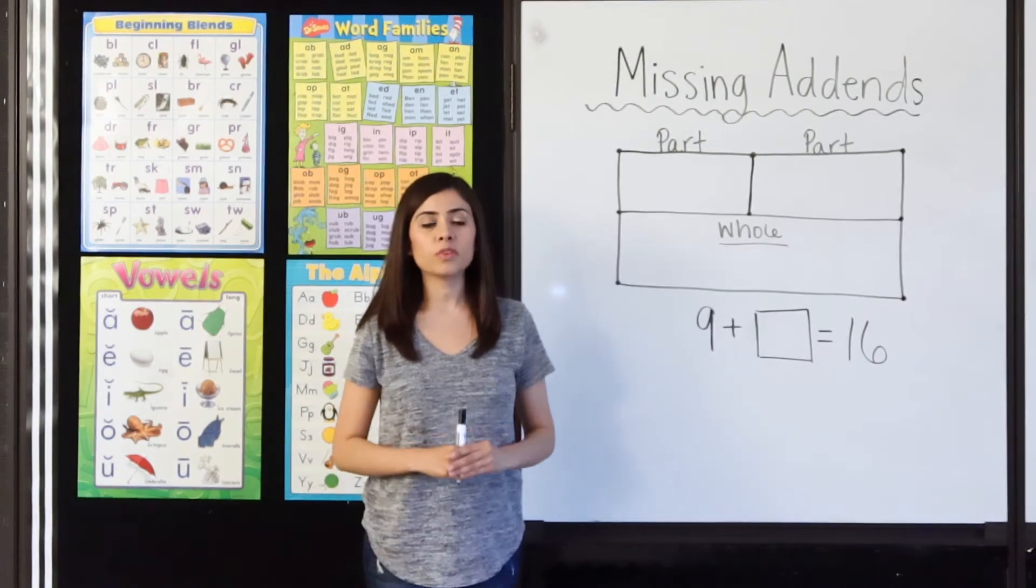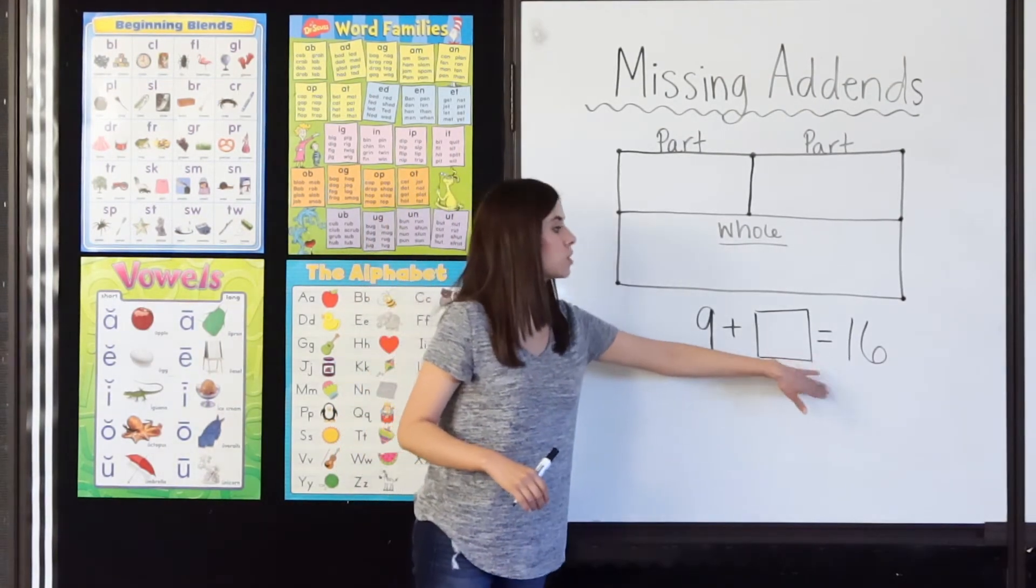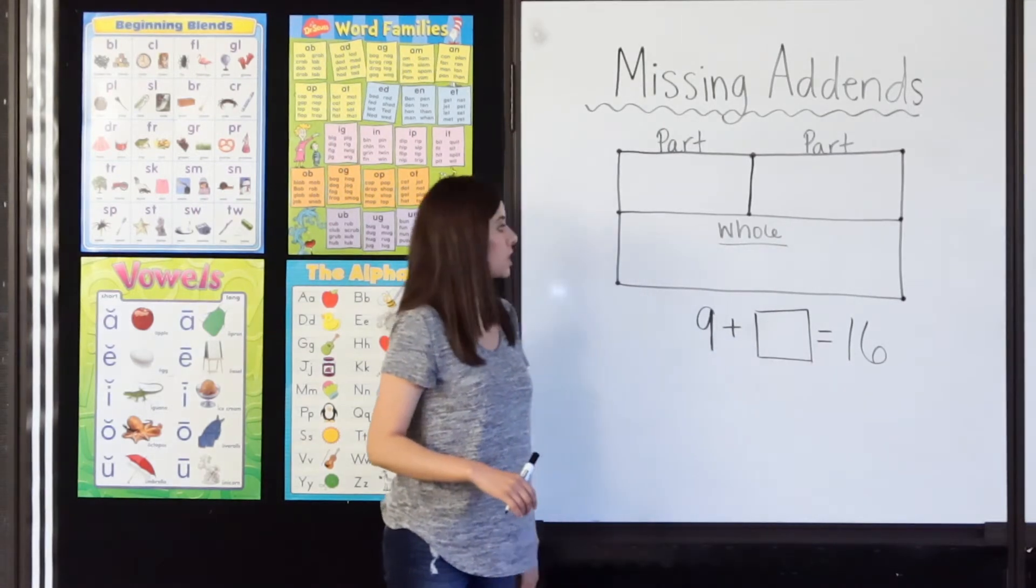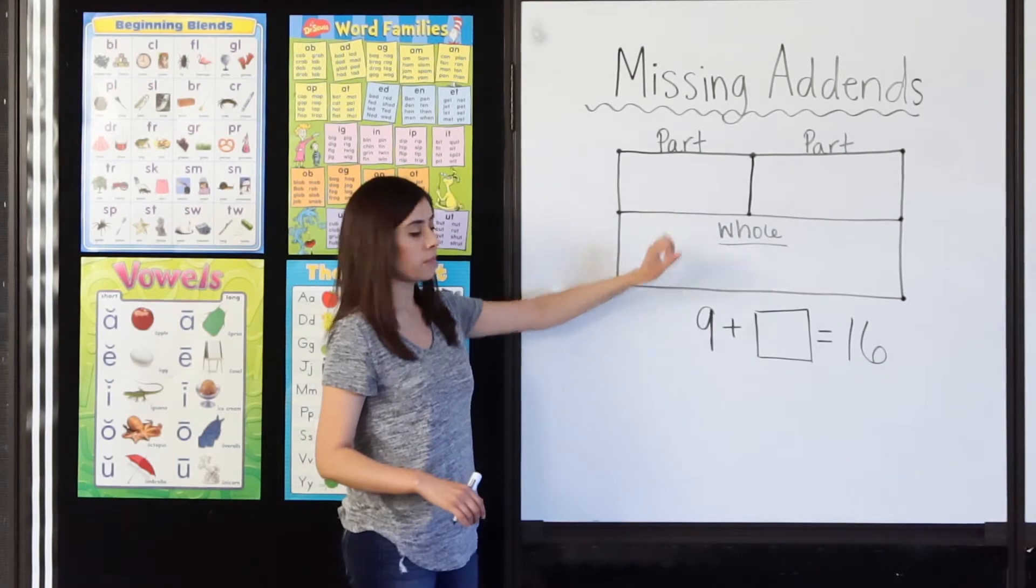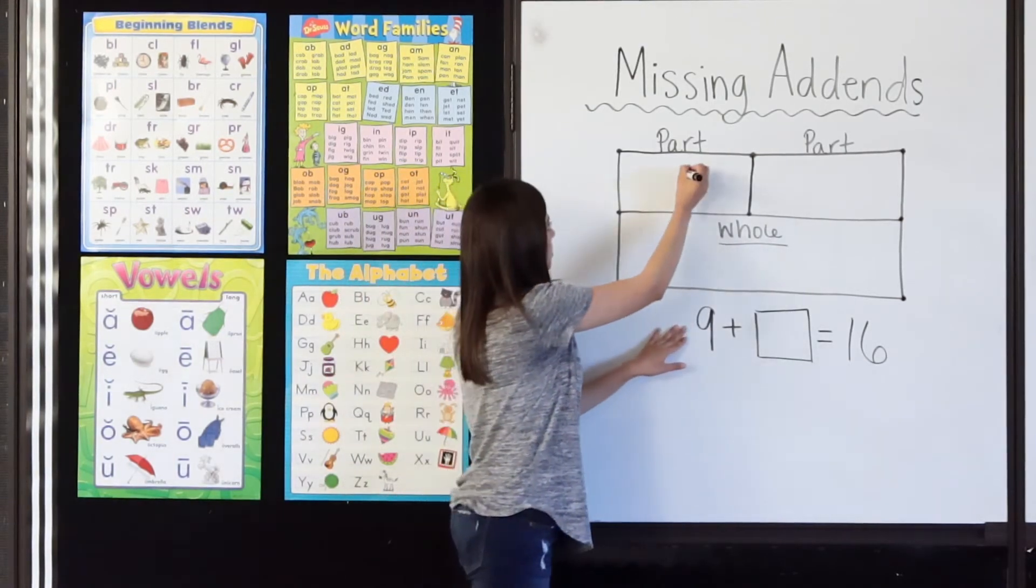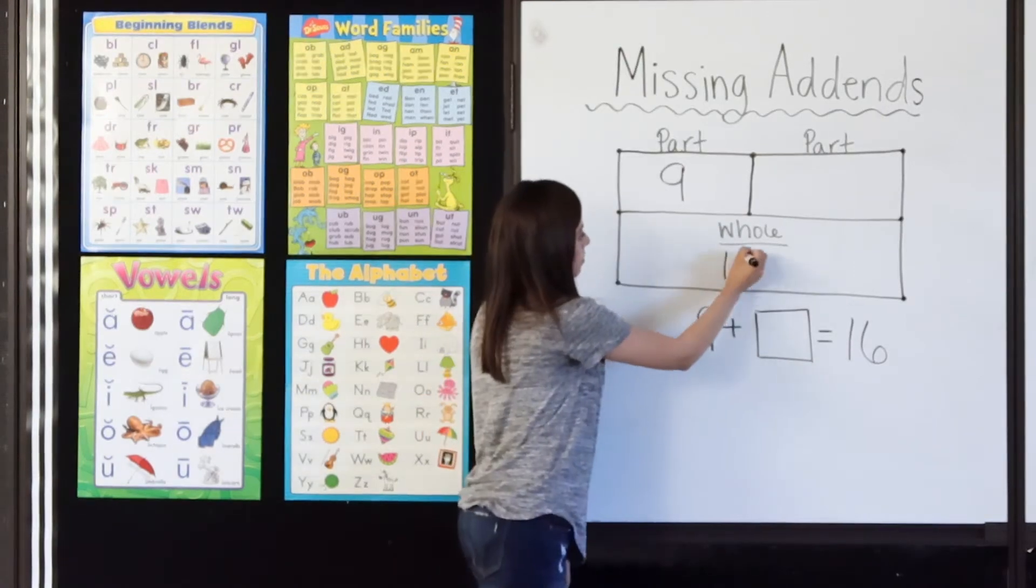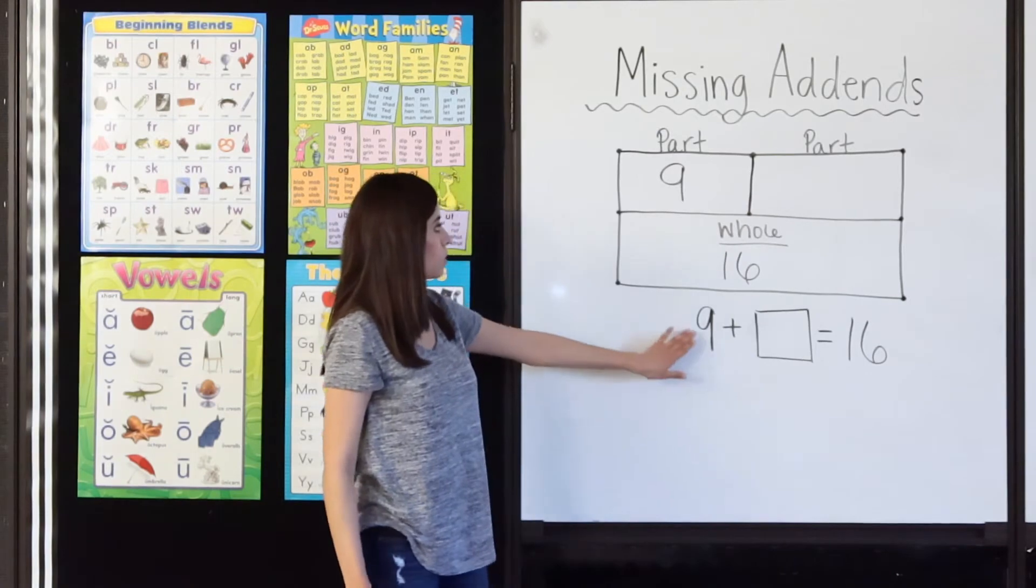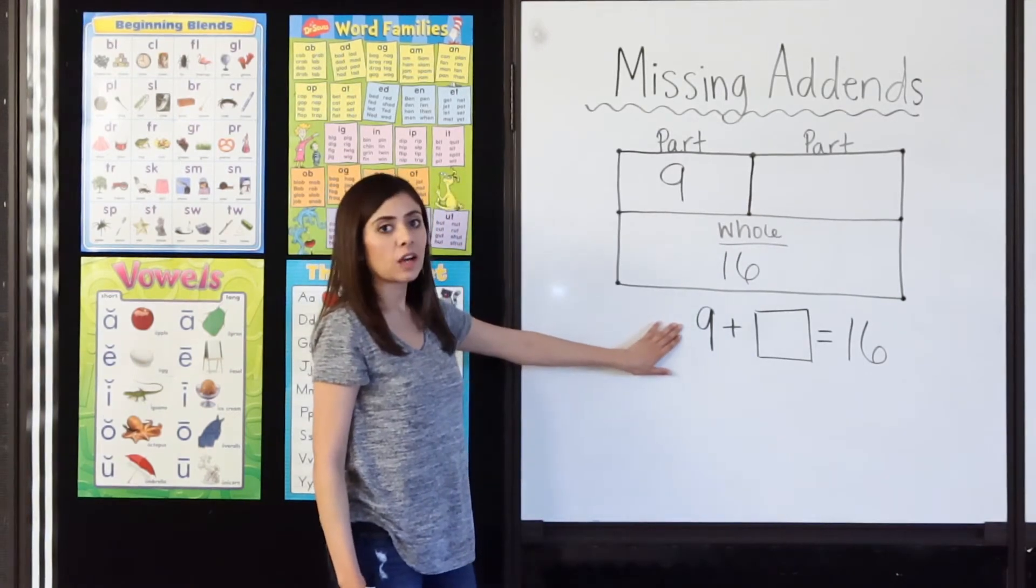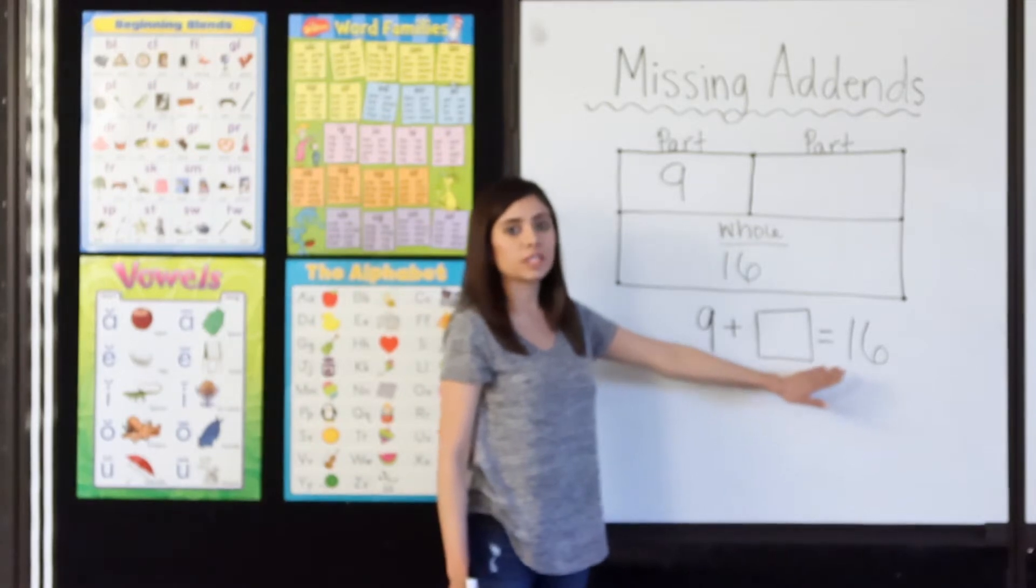Okay, ready for the next example? It says 9 plus hmm equals 16. So let's go ahead and fill in our numbers in our part-part-whole chart. I know that the first part is 9, and the whole is 16. But what is the missing addend? So, I will start at 9 and count up until I get to 16. I will draw circles to help me keep track.